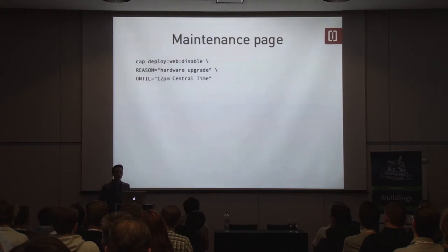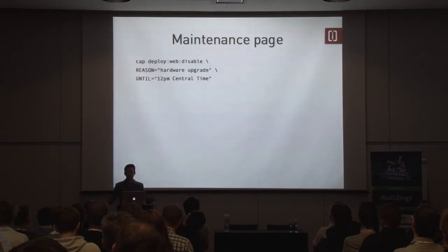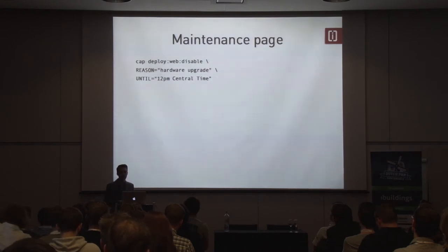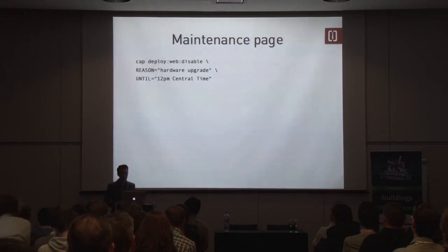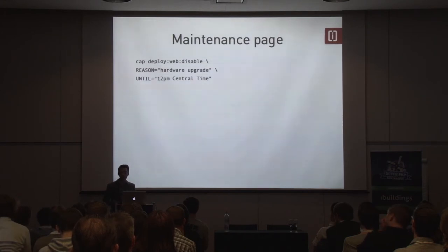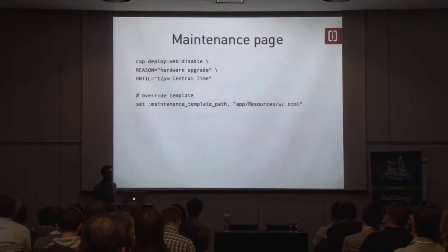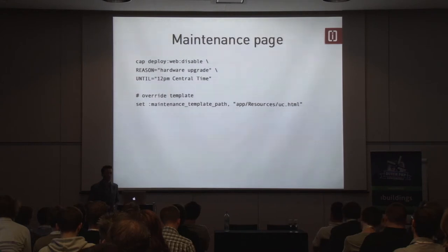I said no more under construction pages — that's actually not entirely true. Just always make sure you have one, because you never know what could go wrong. Maybe your site is down for a day because something totally broke. It's quite easy to do this with Capistrano. You can just say 'cap deploy:web:disable' — that's a task to disable it. It will replace your directory with a blank page. You can even pass in a reason and an 'until' parameter, showing a default message like 'We're upgrading, we'll be back at this time.' If that's not fancy enough, you can overwrite the template with a Twig file or whatever.